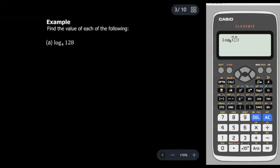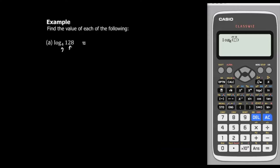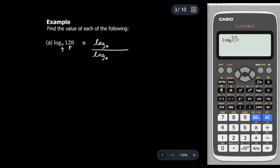Let's look at this example: find the value of log base 4 of 128. We look at the numbers given — 128 and 4 — and we can change them to base 2. So I'm going to change the base of the log to become log base 2, with log₂128 on top and log₂4 at the bottom.